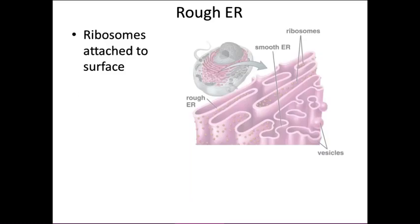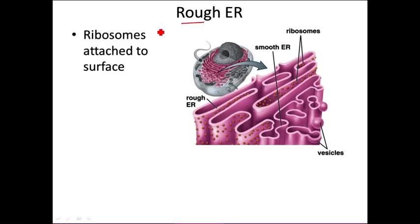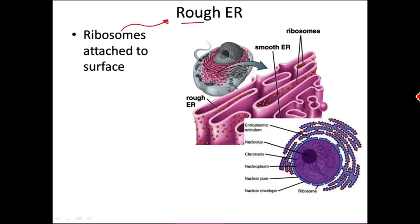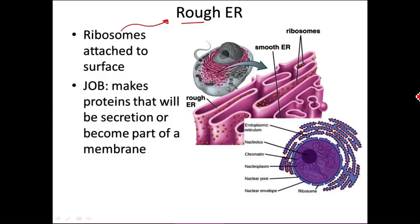The rough ER is called rough because it has ribosomes attached to it — when people first looked through microscopes, they saw this bumpy structure and called it rough. The ribosomes are molecular machines that make proteins. Specifically, the rough ER makes proteins that will be secreted from the cell or become part of the membrane. The ribosomes make these proteins, which feed into the inside of the rough ER and are eventually taken to the edge of the cell and released.